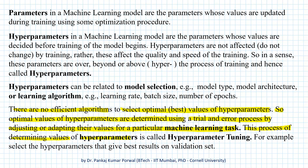Therefore, this trial and error process of determining values of hyperparameters is called hyperparameter tuning. In a way, the process of hyperparameter tuning is similar to tuning a guitar, where we adjust the tension in a string by slightly turning the knob until we get the correct note.